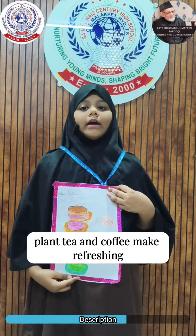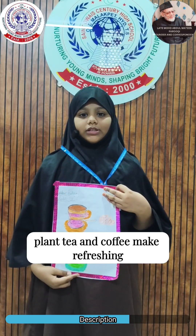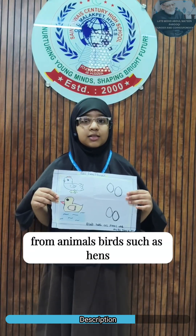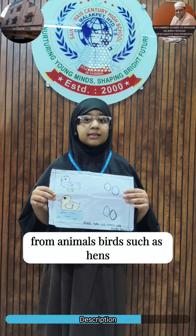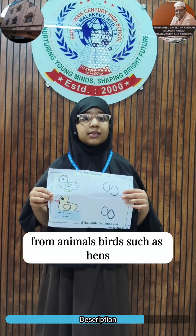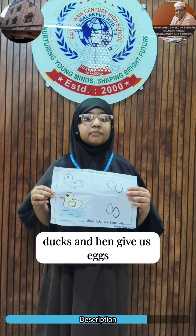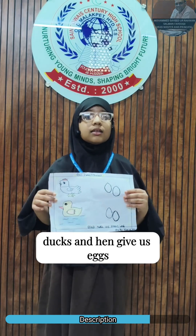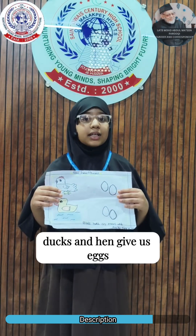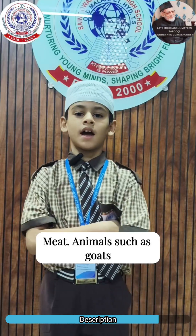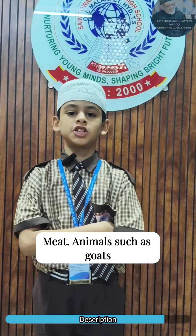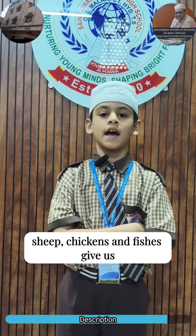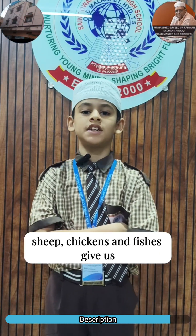Tea and coffee make refreshing drinks. From animals, birds such as hens and ducks give us eggs and meat. Animals such as goats, sheep, chickens, and fish also give us meat.